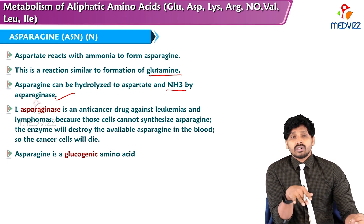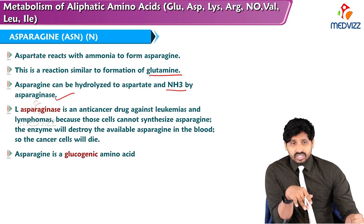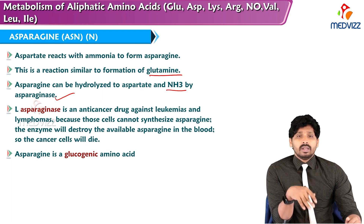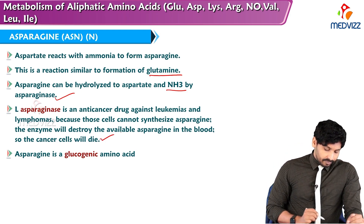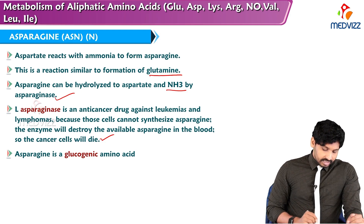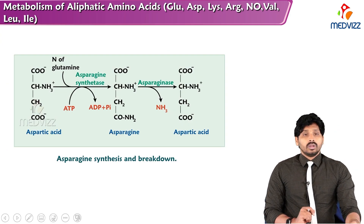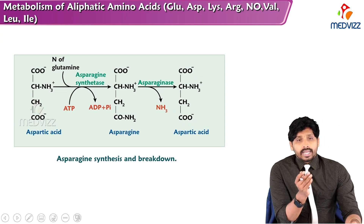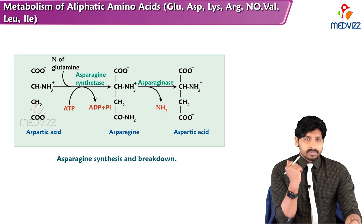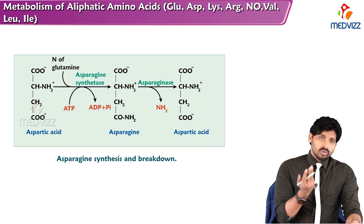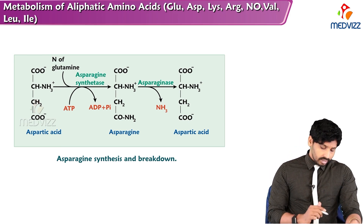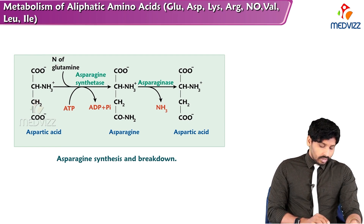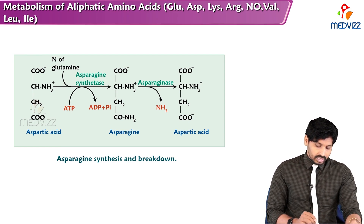L-asparaginase is an anti-cancer drug against leukemias and lymphomas: cancer cells that cannot synthesize asparagine will have available asparagine destroyed in the blood by the enzyme, causing cancer cells to die. Asparagine is a glucogenic amino acid.